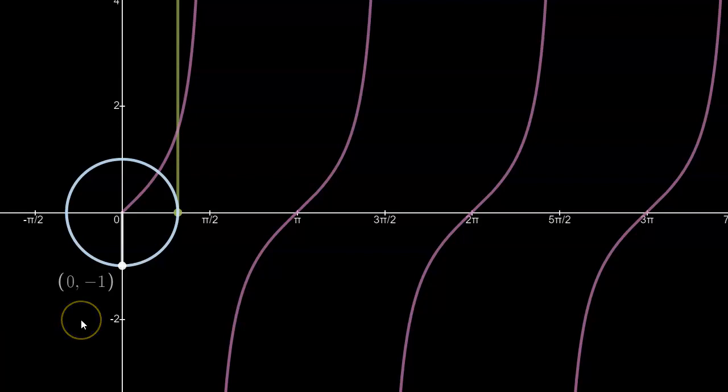So that is the graph of tan x. And you'll notice that the cycle repeats a little bit more often than for the graphs of sine or cosine x.